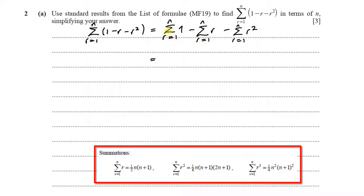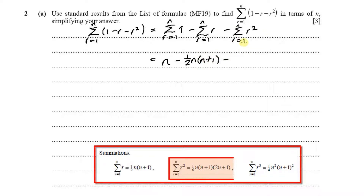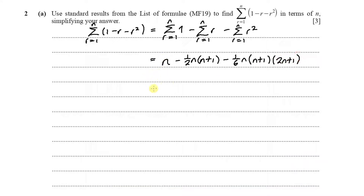For the first part we get n. For the second part we use the standard result to get one-half n(n+1). For the third part we use the standard result to get one-sixth n(n+1)(2n+1).